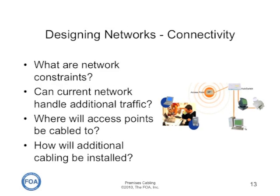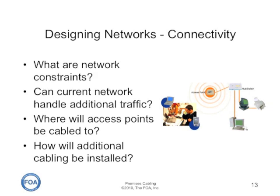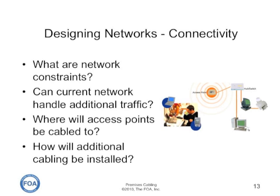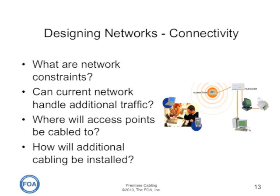When planning for access points, you need to understand the network constraints. Can the network handle additional traffic? Where will access points be cabled to? How will additional cabling be installed? What kind of cabling will be used? Remember that a typical 802.11n access point needs to have a switched one gigabit per second data connection in order to be effective.